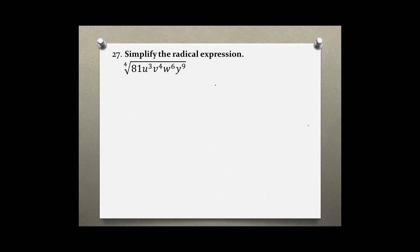Problem number 27: simplify the radical expression. We have the fourth root of 81u cubed, v to the 4th, w to the 6th, and y to the 9th. Not all of these are perfect fourth roots, so we are going to split them into perfect and non-perfect fourth roots.